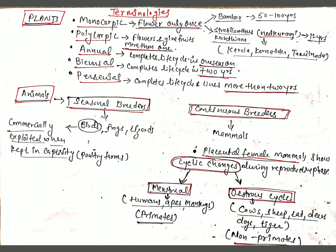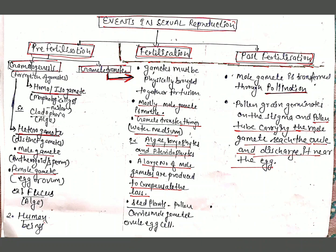After terminologies, we will discuss the events in sexual reproduction. Fertilization, or fusion of gametes, is the most vital event of sexual reproduction. Before fusion, we must know how gametes are formed — gametogenesis — and how they are brought together — gamete transfer. These two processes come under pre-fertilization events. After fertilization, the formation of the zygote and development of the embryo from the zygote come under post-fertilization events.